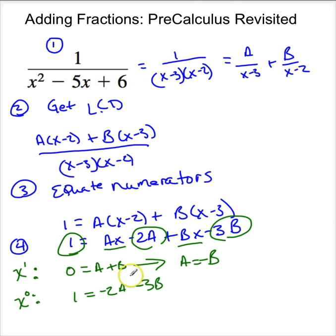I'm going to plug this in. So I have 1 is equal to minus 2, now A is minus B, minus 3B, and that tells me that B, let's see, so this is 2 minus 3 minus B, so B is equal to negative 1, which tells me A is equal to 1.